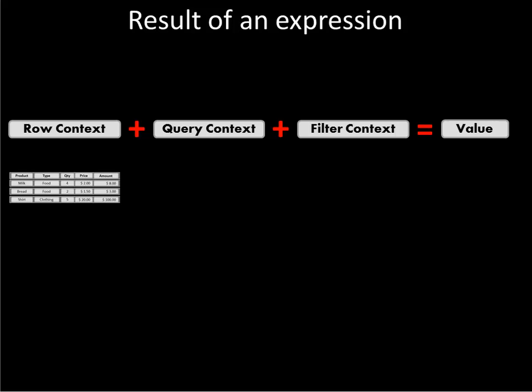It's very important to realize that all three of these work together to determine the value we get from our calculation. Visually, our table in our model may include a set of rows and columns. Our query may begin by including only some of those columns, already limiting what's available. Then the filter context is what's happening around that query — for example, a slicer on the spreadsheet where clicking 'shirt' limits the query to just that row. So we start with our rows, query them to reduce the width, then apply a filter to reduce how many rows are in it.